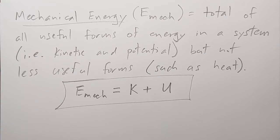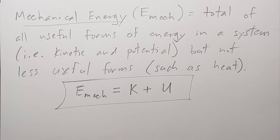If we have a system and the only forces inside that system are conservative, that means within the system we could have our conservative force adding or removing kinetic energy. But if it removes kinetic energy, it's going to add potential energy. If it adds kinetic energy, it's going to remove potential energy. They're just going back and forth. And if that conservative force is inside the system, we just go from having kinetic energy inside the system to having potential energy inside the system and back. That means the total amount of energy in the system has to be constant.